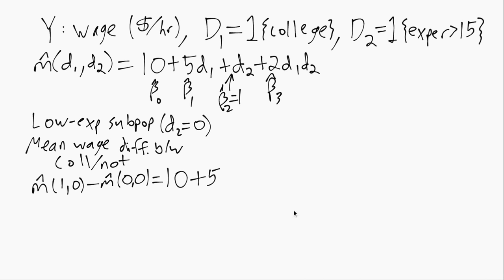Then we're subtracting M hat(0,0), which just has 0 for all of the D terms because both of the Ds are 0, and we just get 10. So the difference—the 10s cancel out—and we just get 5, which is beta hat 1, the coefficient on D1, the first dummy.